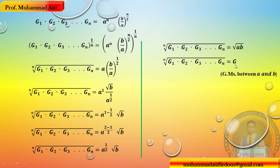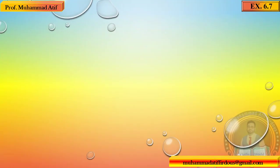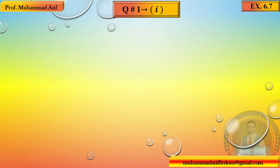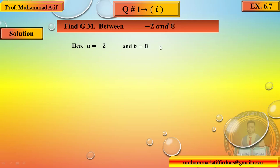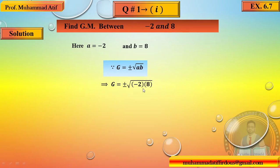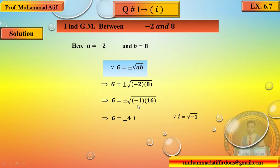Geometric mean between A and B کی یہ deduction یاد رکھیں — objective اور short questions میں آ سکتی ہے۔ Question number 1: Find geometric mean between -2 and 8۔ یہاں A = -2، B = 8۔ Formula: G = ±√(AB) = ±√(-2×8) = ±√(-16) = ±√16 · √(-1) = ±4i۔ تو geometric mean = ±4i ہے۔